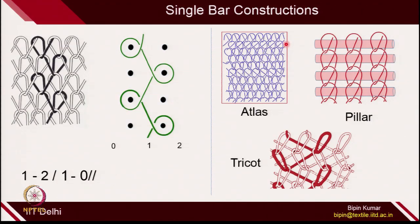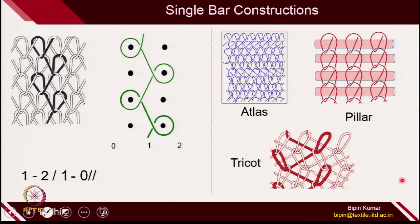I already introduced some common single bar constructions frequently used in the market and in research. The first is the tricot design, where the underlap is one pitch and the overlap is also one pitch. The other two categories are atlas and pillar. The pillar is not possible on its own because the loops or columns are not connected with each other — that's why we need weft inlays. Atlas, pillar, and tricot are usually produced on tricot machines where you just need one guide bar.